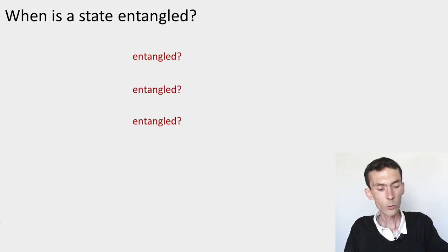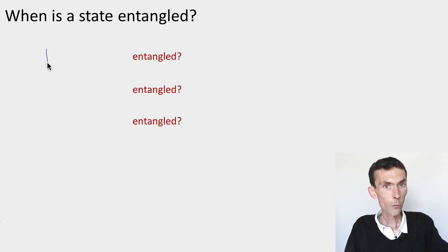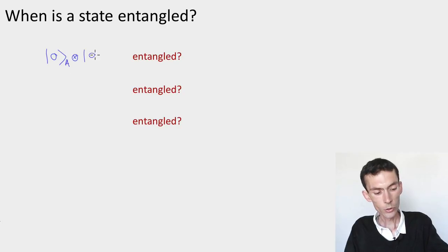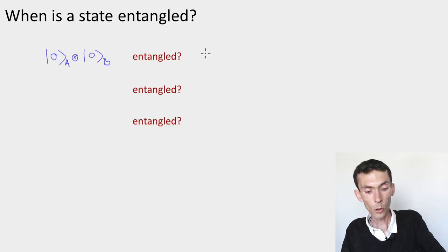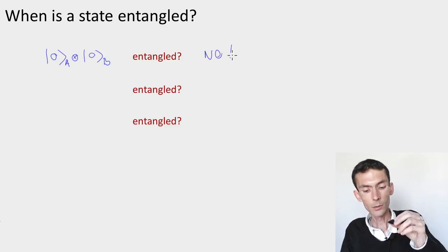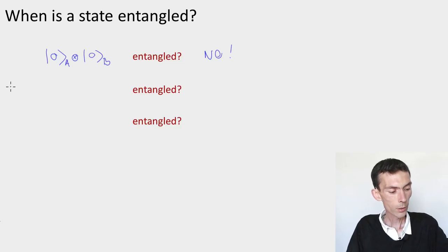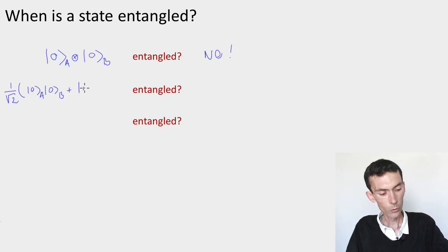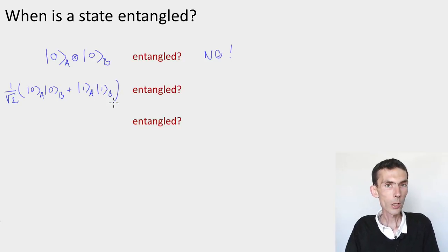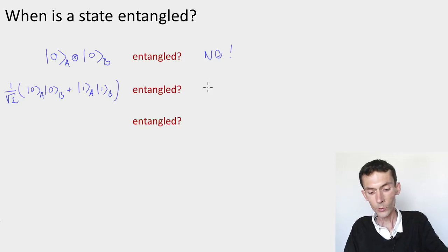Let's look at a few states you've seen before. The first simple example would be |0⟩ ⊗ |0⟩. Is this an entangled state or not? It's not — it's a product state. Let's take another example: 1/√2 times |0⟩_A |0⟩_B + |1⟩_A |1⟩_B. Is this entangled or not? Yes, this is an entangled state. It's a Bell pair.